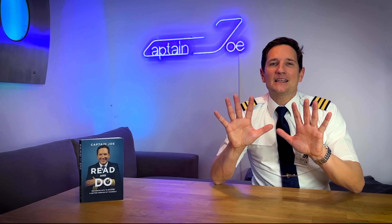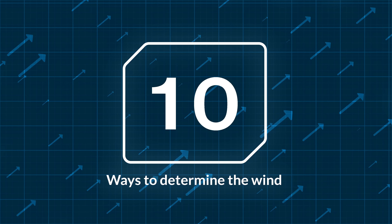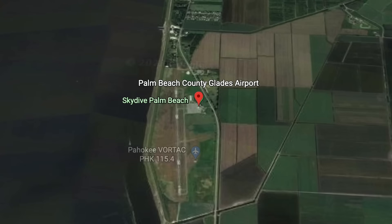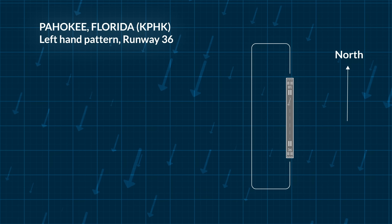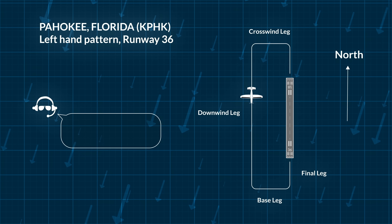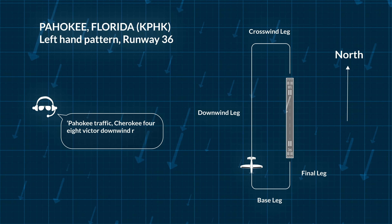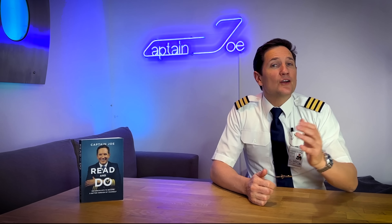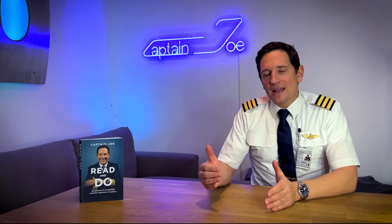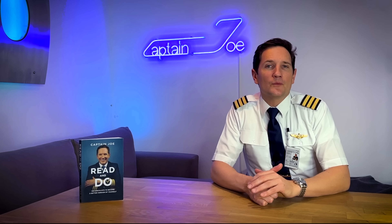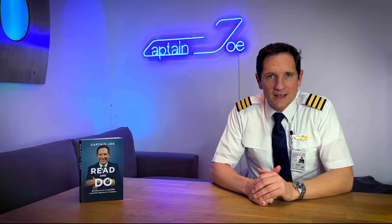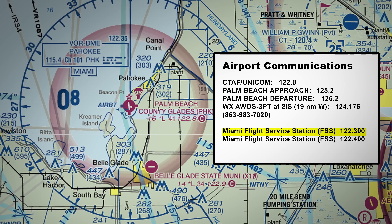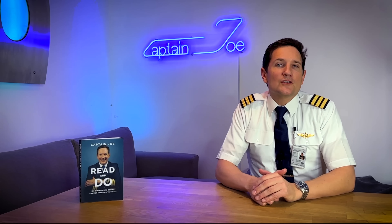Here are my top 10 tips for determining the wind direction during daytime hours. Number 10: when approaching an uncontrolled airport — let's say Pahokee, north of Miami, Florida — and there are other pilots already within the traffic pattern, they have to report their position on the Unicom frequency. For example: 'Pahokee traffic, Cherokee 48 Victor, downwind, runway 36, Pahokee traffic.' Meaning the other aircraft is flying onto runway 36. Your colleague has already done the determining, and you can join the pattern accordingly. Even if no one is in the pattern, you could ask on the Unicom frequency if anyone has just departed or landed and which runway they used, or get more information from Miami flight services station.